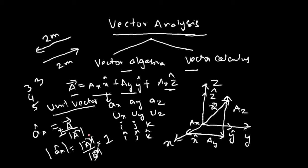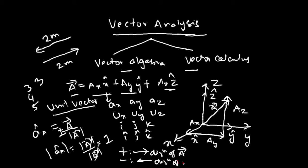That means, if the definition of unit vector is just a vector of magnitude unity, then it can have two directions. In general, the unit vector can have two directions. The plus indicates that the unit vector is along the direction of the vector — it is in the direction of a_bar. Minus indicates that it is exactly in the opposite direction of a_bar. So a unit vector can be defined either in the direction or in the direction exactly opposite to the direction of a_bar. We need to restrict ourselves to one reference, and even though both are valid, we will consider only plus a_bar by mod a_bar as the unit vector definition.